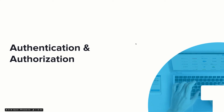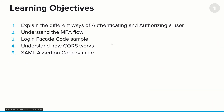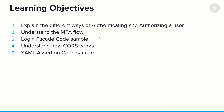Now that we've gone through sample code for users and events, I'd like to take a little bit of time talking about the various API endpoints around authentication and authorization. In this section, we'll talk about different ways to authenticate or authorize a user, how to invoke MFA using our APIs, how to create a login facade, how CORS works, and a SAML assertion code sample.